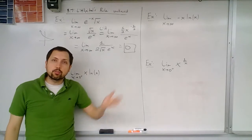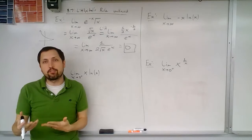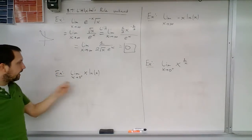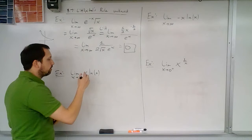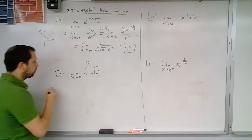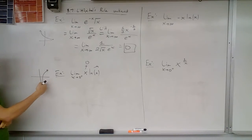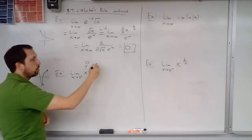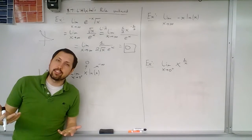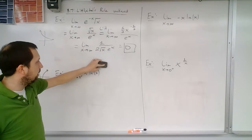So the limit is zero. That's one strategy for dealing with an indeterminate form that is not a fraction but where we want to use L'Hôpital's rule. Next: the limit as x goes to zero from the right of x times the natural log of x. This is going to zero, and the natural log goes to negative infinity. Zero times negative infinity is an indeterminate form, so we'd like to manipulate this.